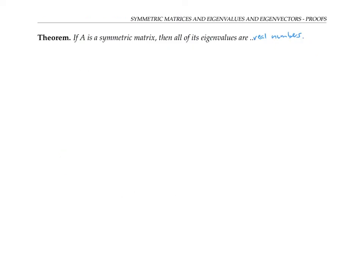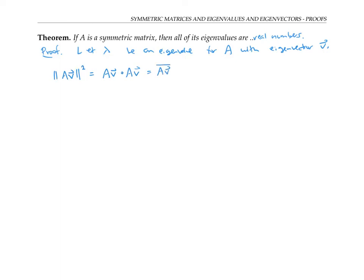Now we're ready to prove that if A is a symmetric matrix, then all of its eigenvalues are real. Let lambda be an eigenvalue of A with eigenvector v — initially allowing lambda to be complex. Consider the quantity |Av|², which equals Av dotted with Av, written as (Av) conjugate-transpose times Av. We include the conjugate to allow for the possibility that Av = lambda·v could be a vector with complex entries. Since the conjugate of a product of matrices is the product of the conjugates, we can rewrite this.